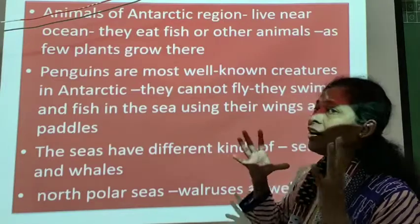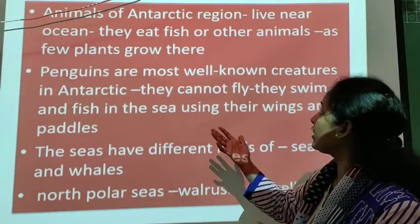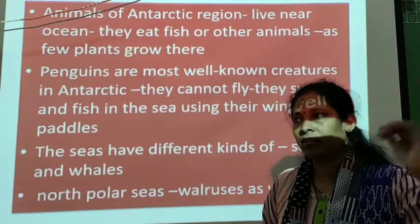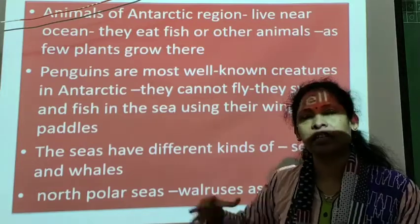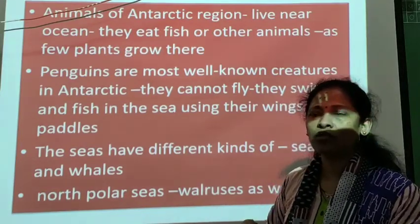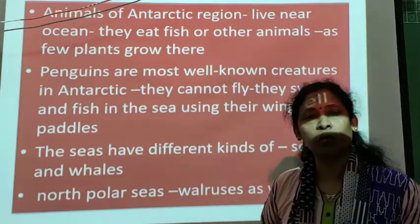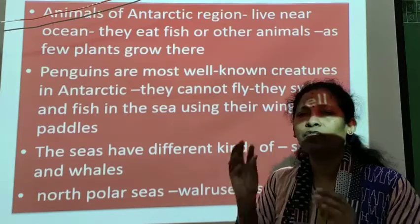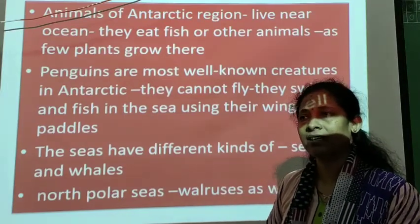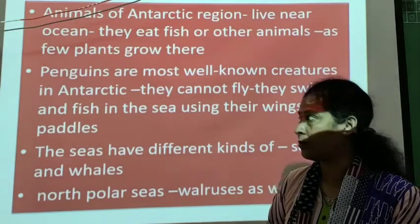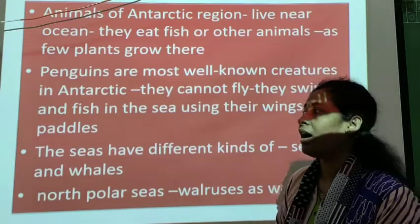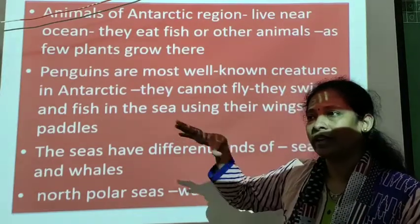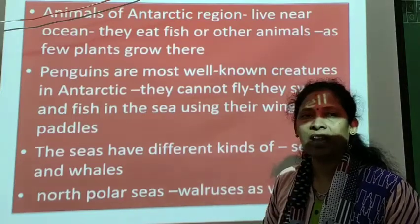Animals of the Arctic region mostly live near the ocean. In the Antarctic region, most animals live in the ocean. As it is a frozen area, the southern ocean is there and animals normally depend on fish. Only few plants grow in the arctic region, so animals depend on fish and other animals. Penguins are the most well-known creatures in the arctic region — they have thick skin so they can easily live there.